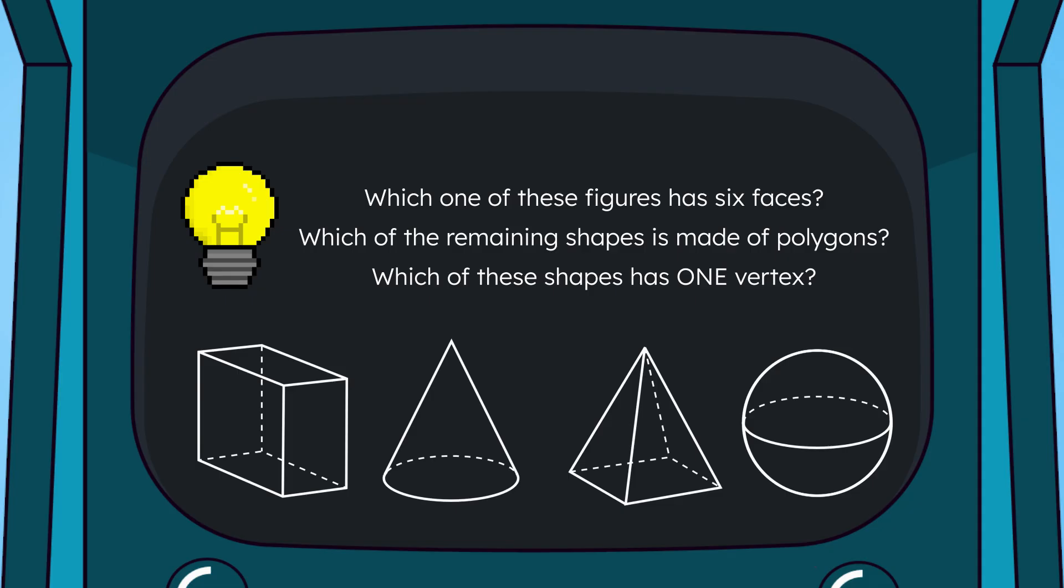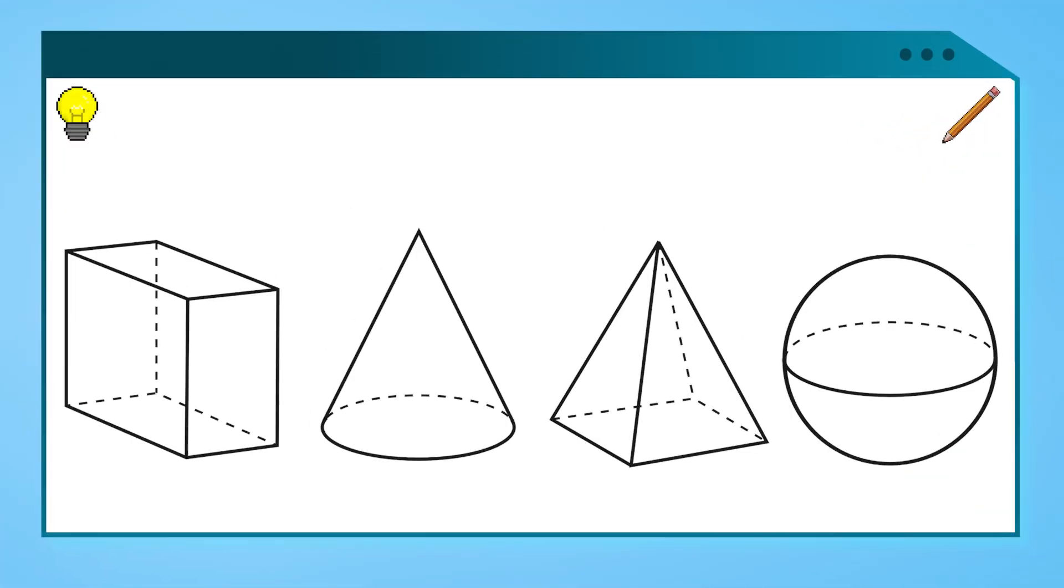Which one of these figures has six faces? Which one of the remaining shapes is made of polygons? Which one of these shapes has one vertex? These will definitely help us narrow down which shape we're looking for.